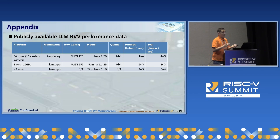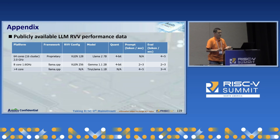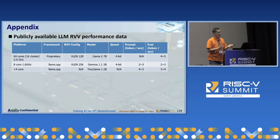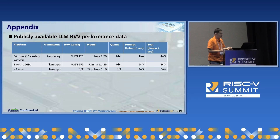Since RVV optimization is still a work in progress, we do not have RVV performance data this time. We collected some real-chip RVV performance data from public sources, and running larger models using multi-core RVV is certainly possible. But I believe it is still important to use software optimization techniques to reduce overall hardware cost as much as possible.